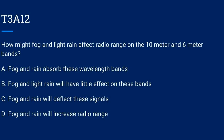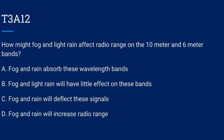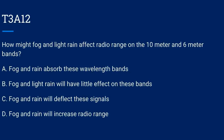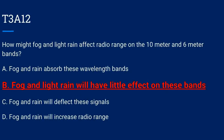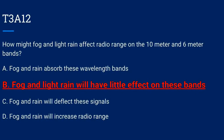T3A12. How might fog and light rain affect radio range on the 10-meter and 6-meter bands? A. Fog and rain absorb these wavelength bands. B. Fog and light rain will have little effect on these bands. C. Fog and rain will deflect these signals. Or D. Fog and rain will increase radio range. The correct answer is B: fog and light rain will have little effect on these bands.